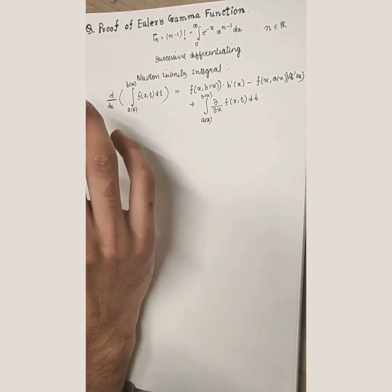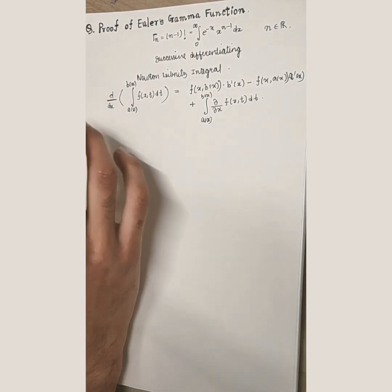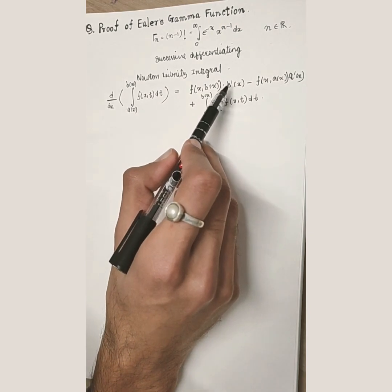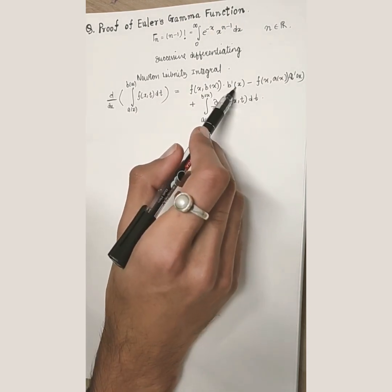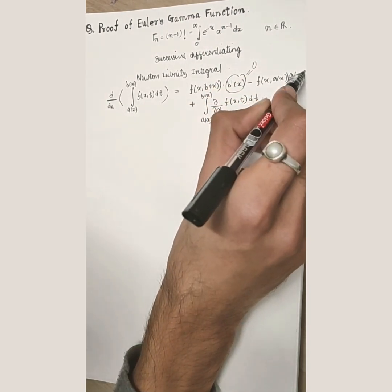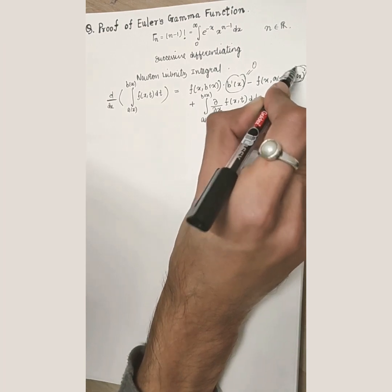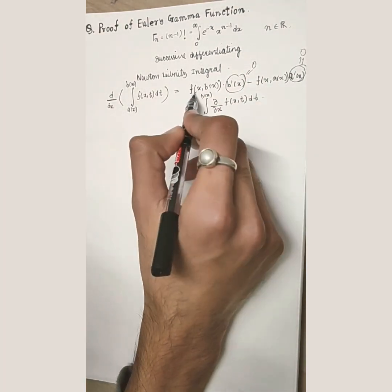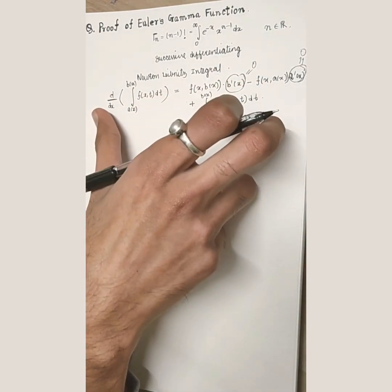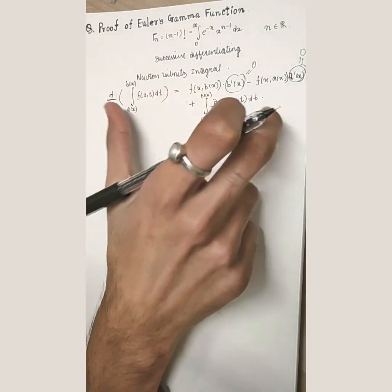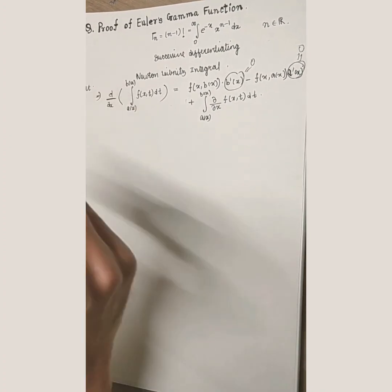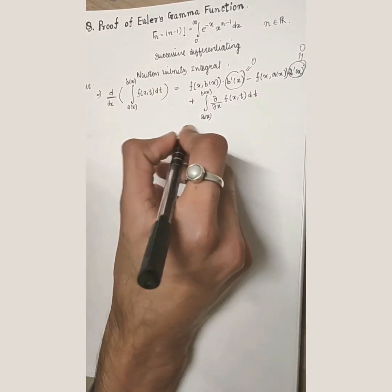Now, if a and b are constants — not functions of x — then b′(x) and a′(x) are both zero, since the derivative of a constant is zero. So those first two terms vanish, and we are left with only the integral of the partial derivative term. We will use this as a result going forward.